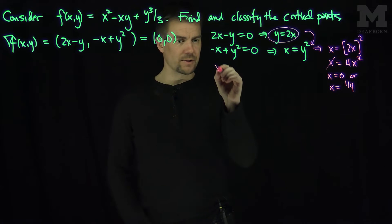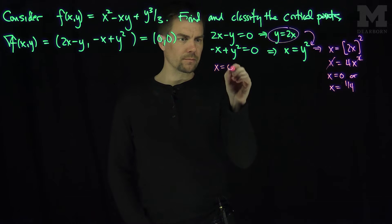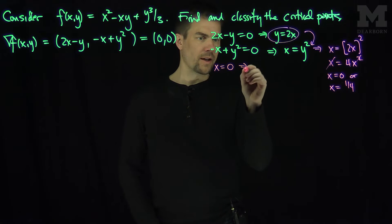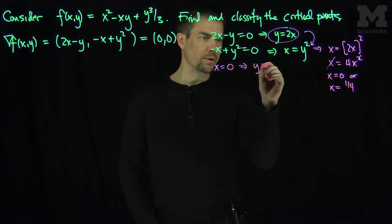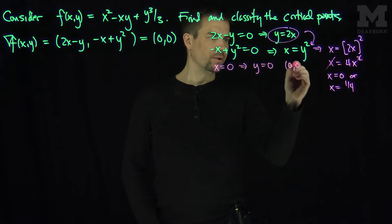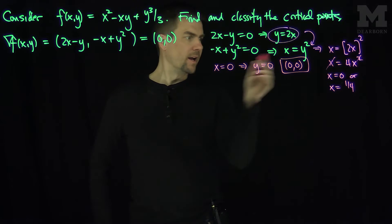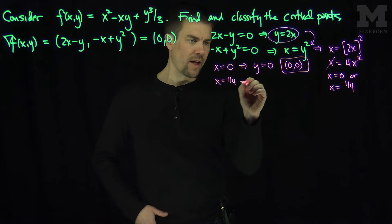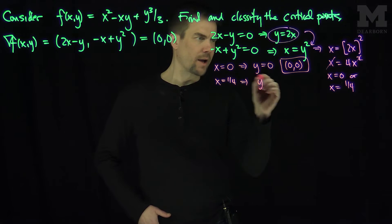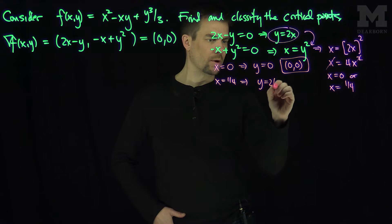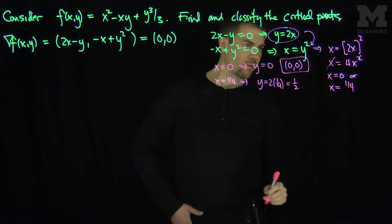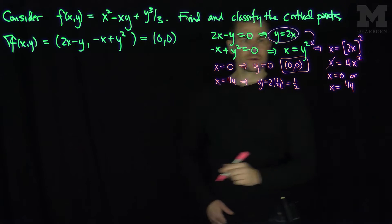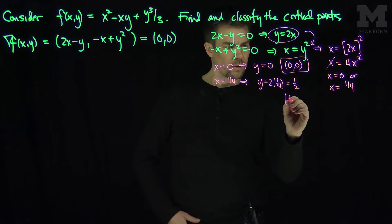Our critical points are: if x = 0, then y = 0, giving the critical point (0, 0). If x = 1/4, then y = 2 × (1/4) = 1/2, giving the critical point (1/4, 1/2).